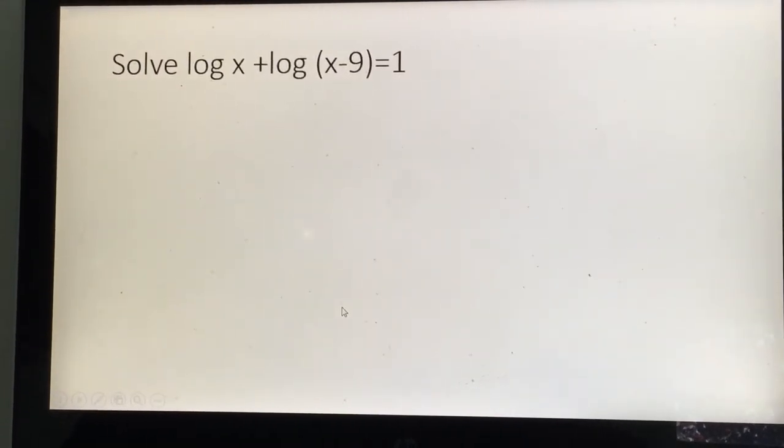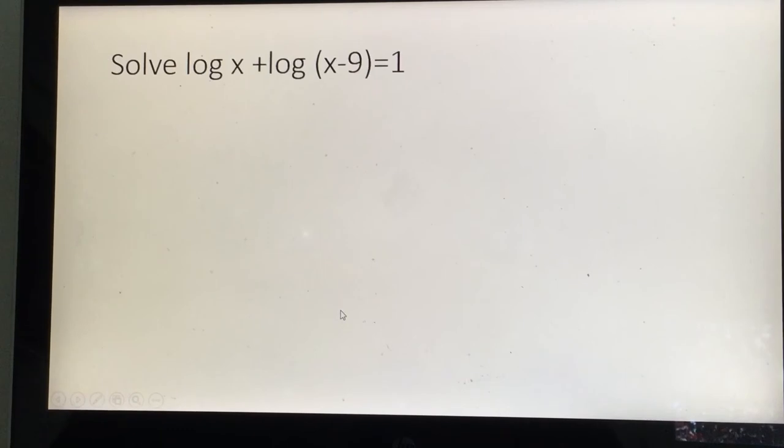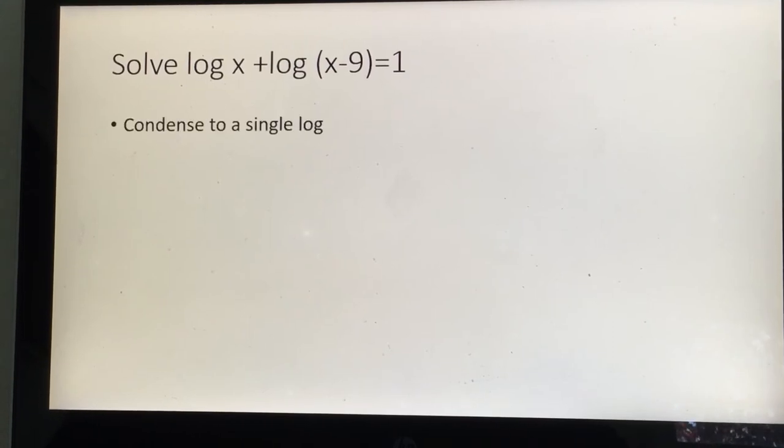I have one more example to show you. Here's one here. Solve log of x plus log of x minus 9 equals 1. Condense it into a single log first. That's why you have to know your log property. So you have the log of x times x minus 9 equals 1. It's a product property. Okay.